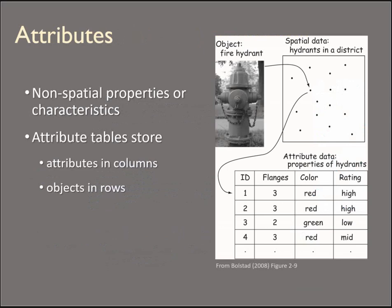The great thing about vector data are the attributes — the non-spatial information we can collect and store that describes the location or the feature at the location. Each feature or object goes in a row; it could be every fire hydrant or stop sign in the city, or a segment of road, river, or stream. Each row is its own feature, and you can store any number of attributes as columns — how many flanges, what color, what rating, when it was last serviced, etc.